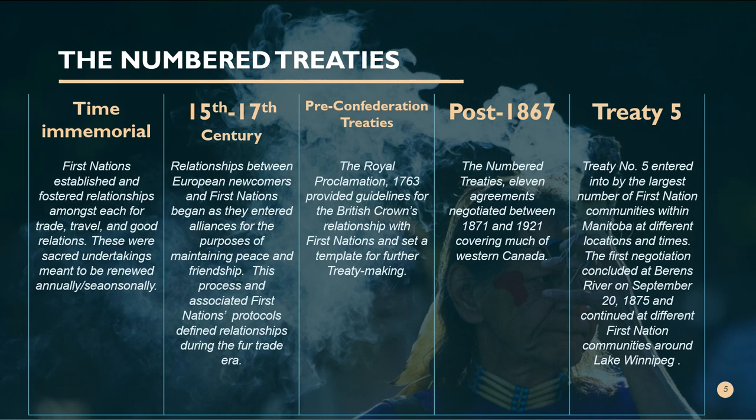Treaty making continued in other parts of the country, including in eastern Canada, as noted in the Royal Proclamation. After Canada confederated in 1867, the Canadian government embarked on a series of 11 treaties with First Nations peoples, primarily in western and northern Canada. These treaties began in the summer of 1871 — Treaty Number One was made on August 3rd, 1871 at Lower Fort Garry, just north of Winnipeg near Selkirk, Manitoba.